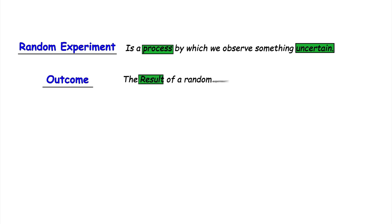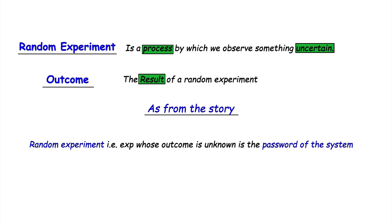A random experiment is a process by which we observe something uncertain. After the experiment, the result of the random experiment, or the outcome, is known. From the story we can see that here the random experiment, the experiment whose outcome is unknown, is the password of the system, as neither Richard nor Ava knows what the password is.